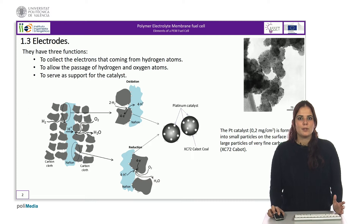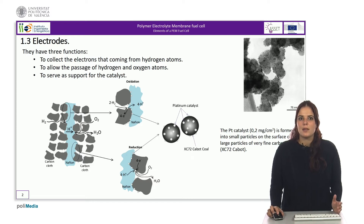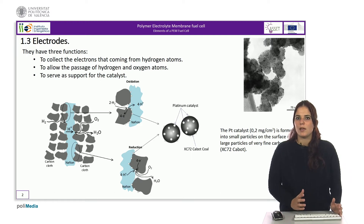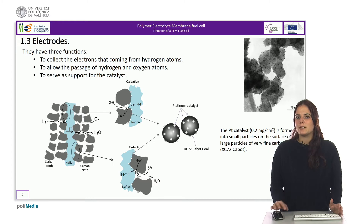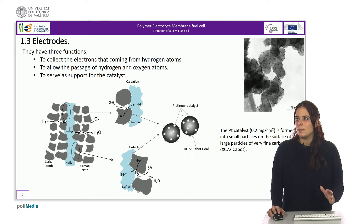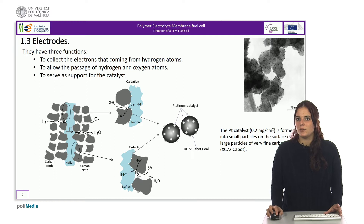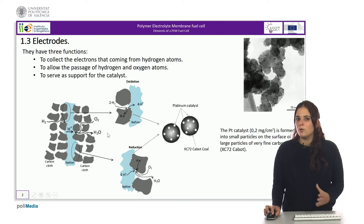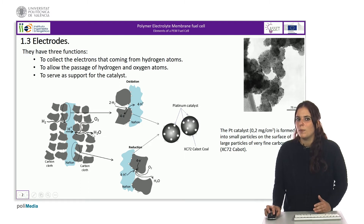Both electrodes must be distributed over the entire surface of the membrane in order to allow the collection of electrons throughout the membrane. The reaction gases must be able to reach the interfaces between the electrode, the membrane, and the catalyst, and therefore they must be porous. We can see this characteristic of the electrodes in the figure, where it is appreciated how the porous material allows the passage of the different reaction compounds.